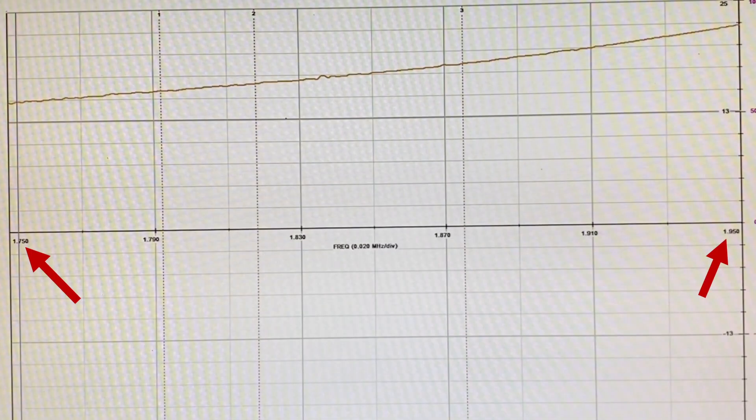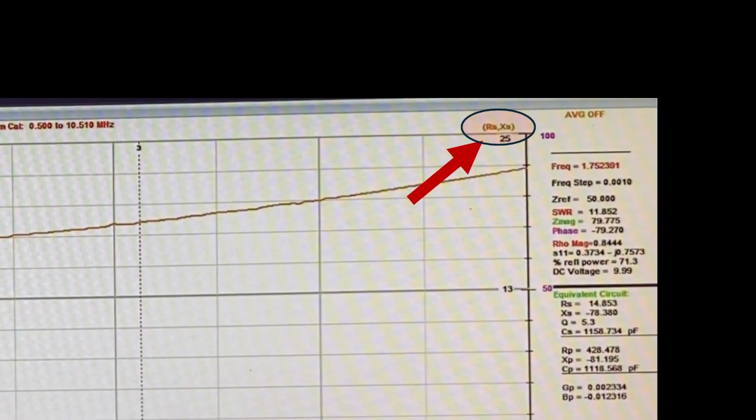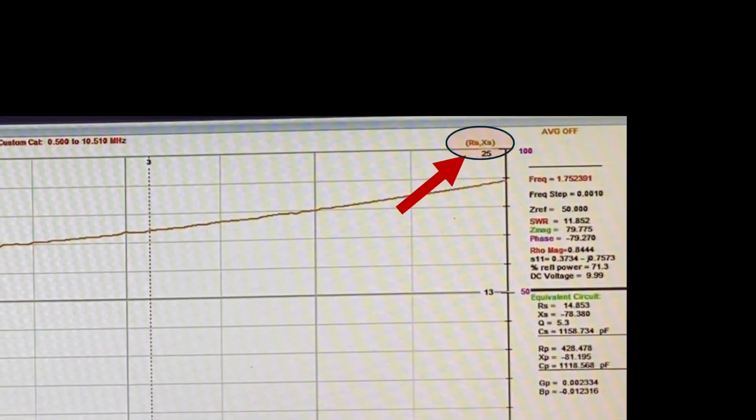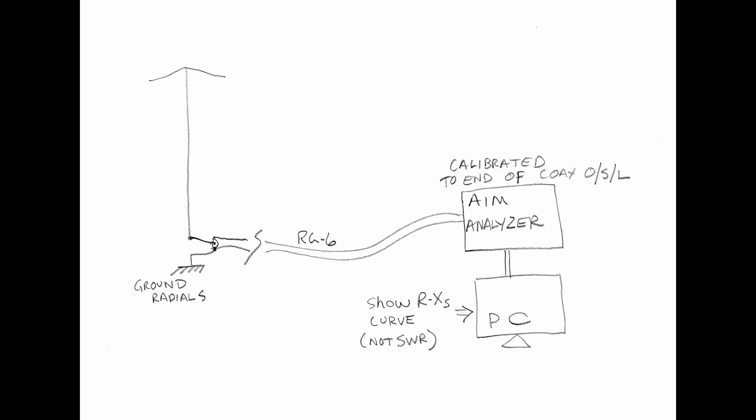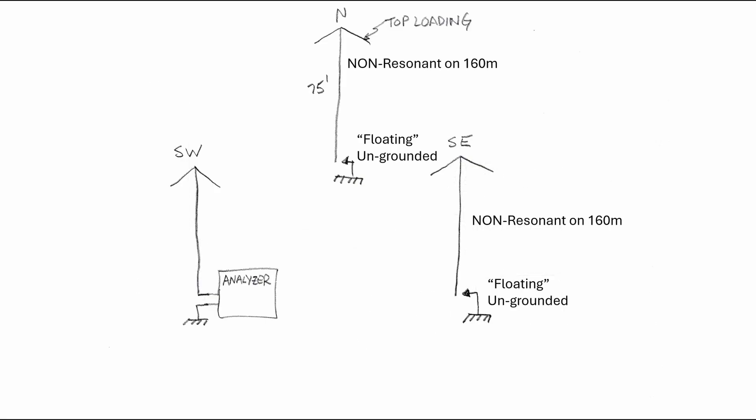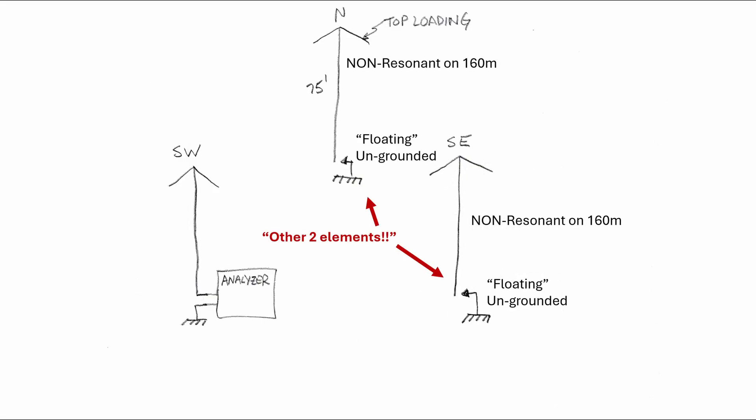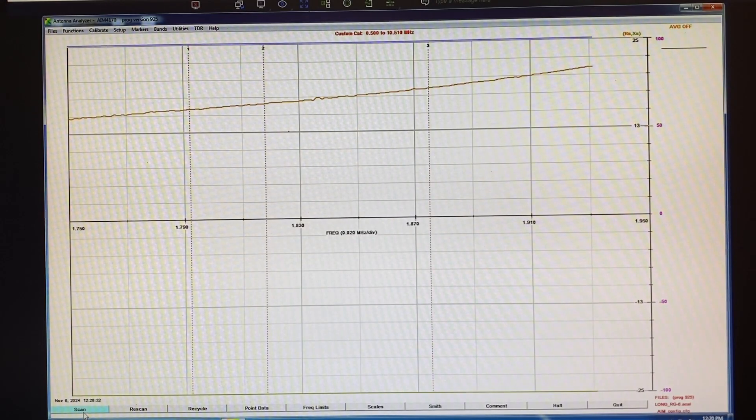Most analyzers are going to let you do this. Today I'm using the legacy AIM analyzer, but later I'll talk about using the Rig Expert AA55 Zoom, and even a Nano VNA is going to work. So after calibrating the feed line, let's do a frequency sweep from 1.75 MHz to 1.95 MHz across the 160-meter band.